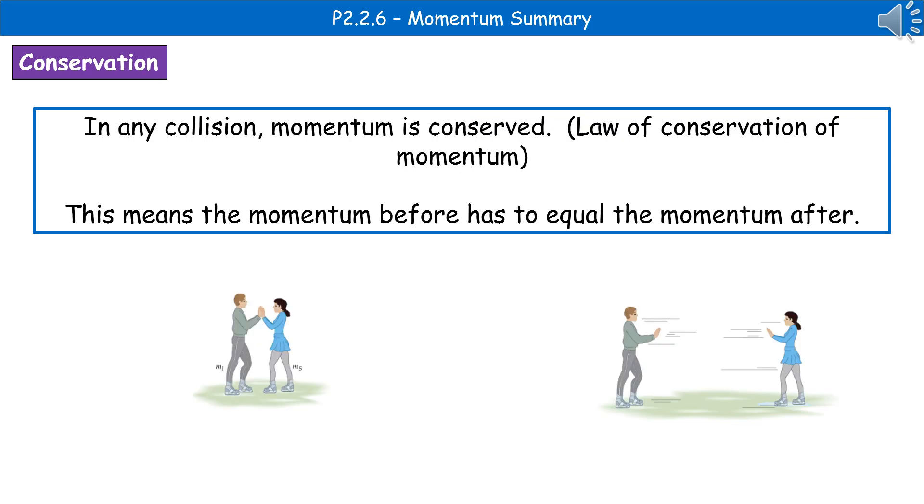The next thing we need to consider is the law of conservation of momentum, which just states that in any collision, momentum is conserved. So that means that the momentum before has to equal the momentum after. So if we've got our example of our two ice skaters there, initially their momentum is zero because they're not moving at that point. And when they push away from each other, then the total momentum must equal zero. Because they're moving in opposite directions, obviously that's how they cancel each other out to give us the zero momentum, so that the momentum before is equal to the momentum after.